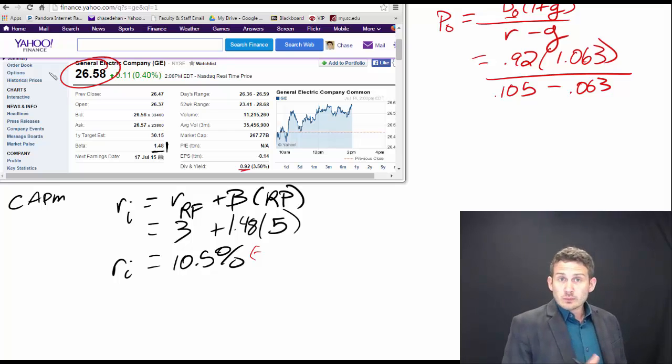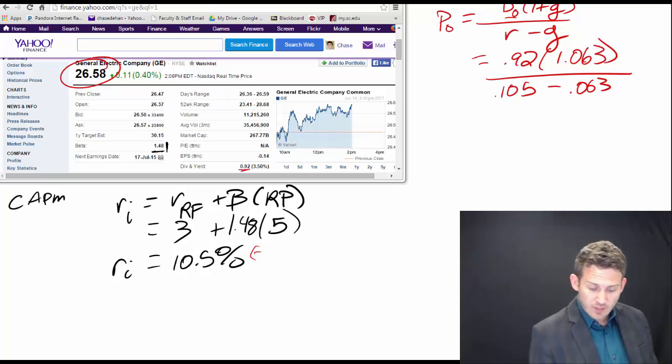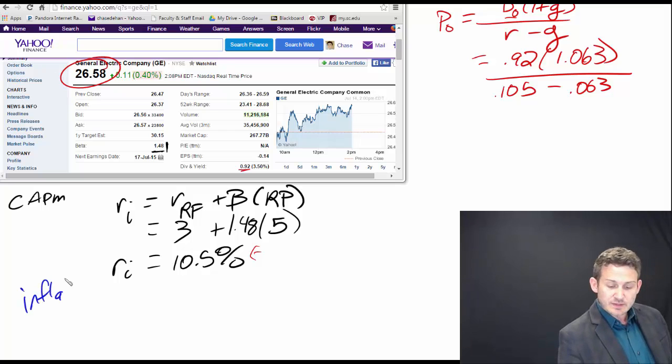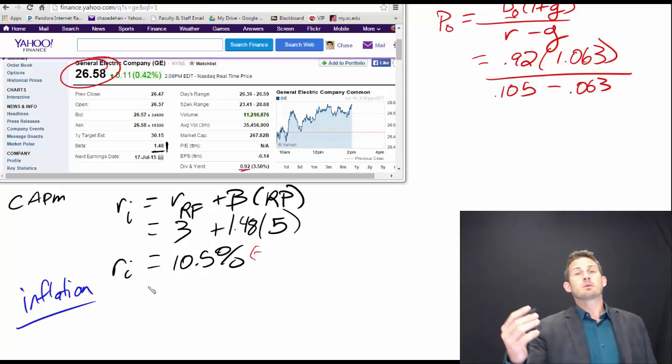Now what can happen is that if we have inflation, inflation means that the price level rises. When the price level rises, that means that we're gonna have adjustments to our interest rates.